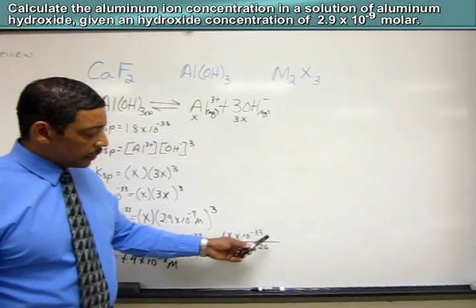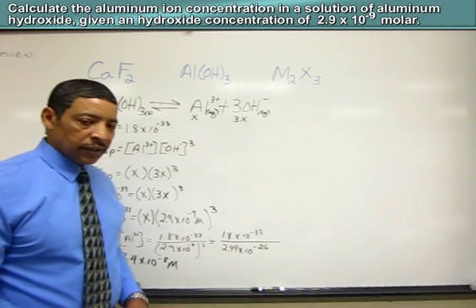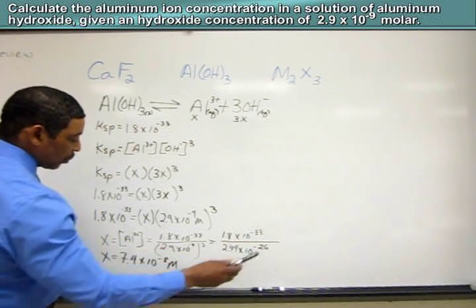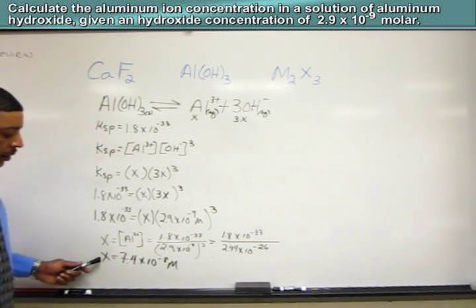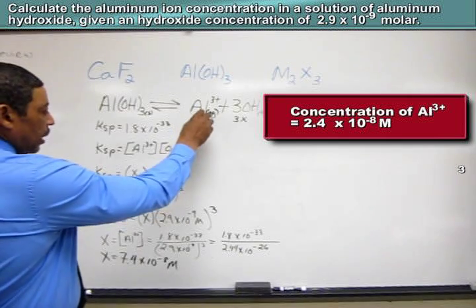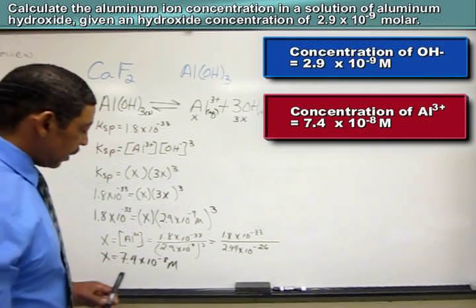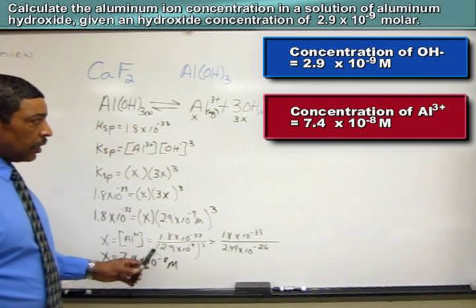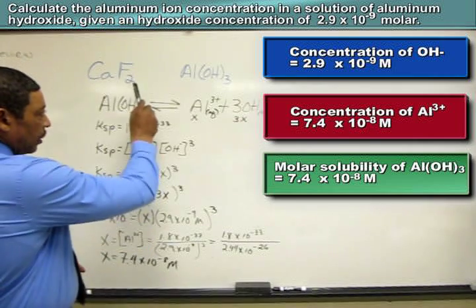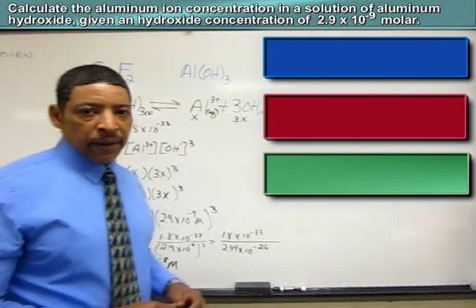This will equal 1.8 times 10 to the negative 33. Now, clearing the denominator, we will get 2.44 times 10 to the minus 26. Dividing 1.8 times 10 to the negative 33 by 2.44 times 10 to the negative 26 will generate a value for x to be 7.4 times 10 to the minus 8 molar. This means that given a concentration of hydroxide of 2.9 times 10 to the minus 9 molar, the aluminum ion concentration will be 7.4 times 10 to the minus 8 molar, which coincidentally also reflects the molar solubility of the compound since the ratio here is 1 to 1, which means that the amount of aluminum ion produced will also reflect the amount of the compound that actually dissolves.